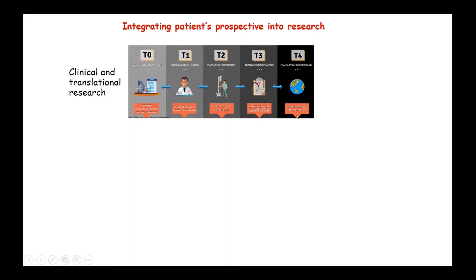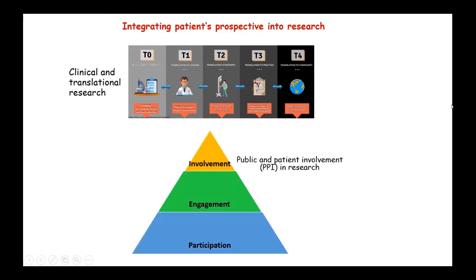This is a very successful strategy, but patients are really only involved once the idea has already been developed and conceptualized in the lab. The type of research we are trying to do is what we call public and patient involvement in research, which as the name suggests requires the involvement of the patient, the engagement between the patient and the researcher, and the participation of the patient in our research. In this way, patients are really involved from the beginning of the research.